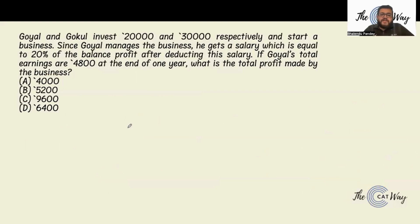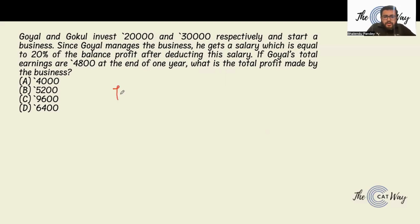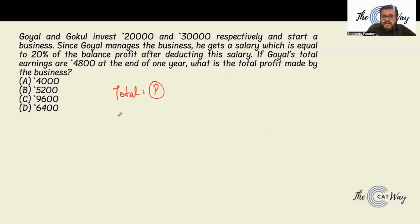Next: Goyal and Gokul invest 20,000 and 30,000 respectively and start a business. Since Goyal manages the business, he gets a salary equal to 20% of the balance profit after deducting his salary. If Goyal's total earning is 4,800 at end of the year, what is the total profit? Let's say total profit is P and his salary is X, so profit after salary is P minus X. Goyal's salary equals 20% of (P minus X), which is P by 5 minus X by 5.